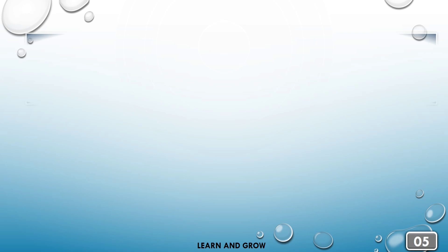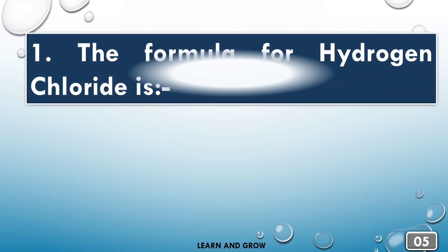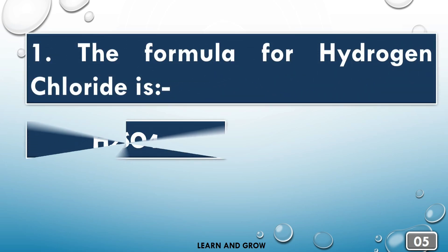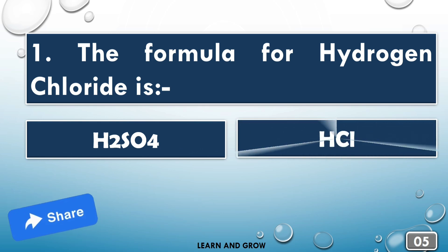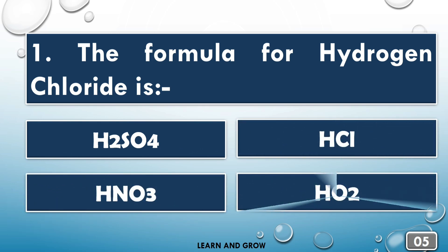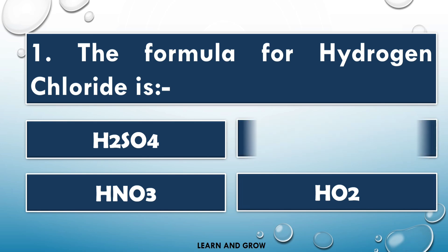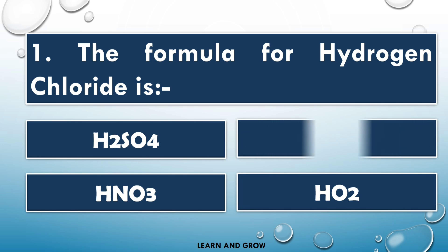The formula for hydrogen chloride is HCl. The right answer is option B.